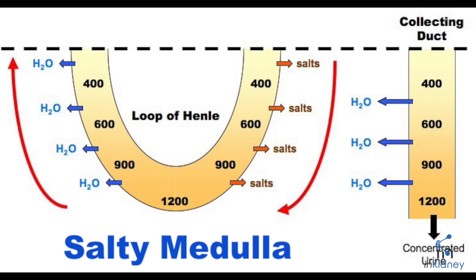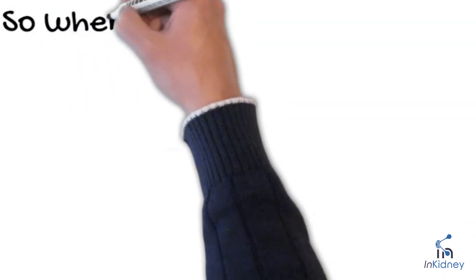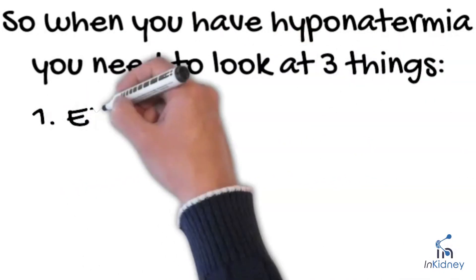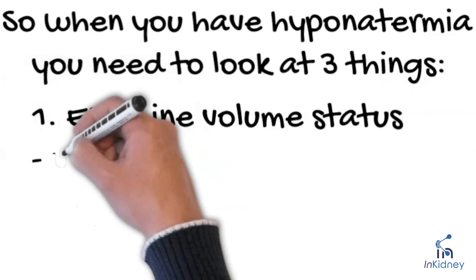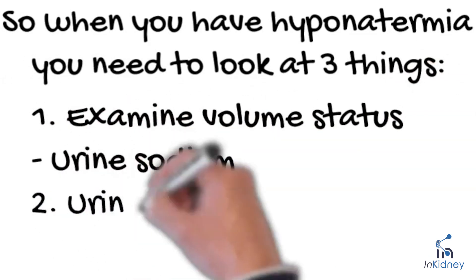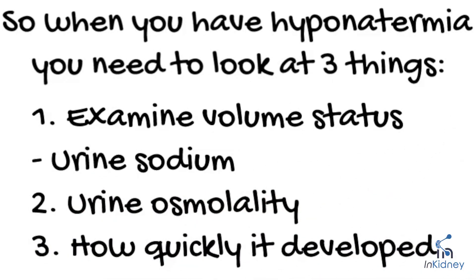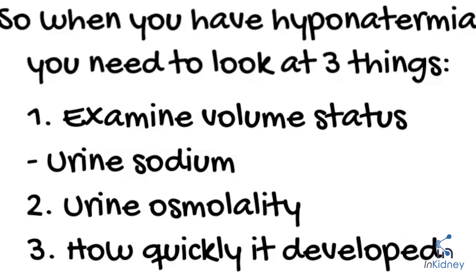These are two very important things to remember when you think about hyponatremia evaluation and management. When you evaluate a patient with hyponatremia, you really need to look at three things: first, examine the volume status — urine sodium can help with that in addition to your physical exam; second, look at the urine osmolality; and third, look at how quickly the serum sodium dropped.